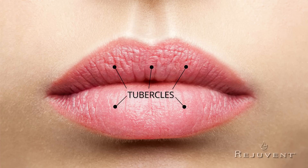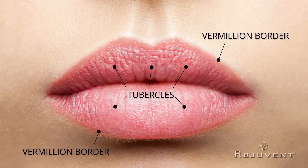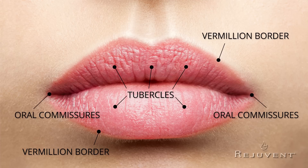In most patients, the midline tubercle of the upper lip is not as prominent as the two on either side of it. The border between the red lips and the surrounding upper and lower white lips is referred to as the vermilion border. In youthful lips, this is a slightly prominent ridge that serves to frame the lips. The corners of the lips are referred to as the oral commissures.